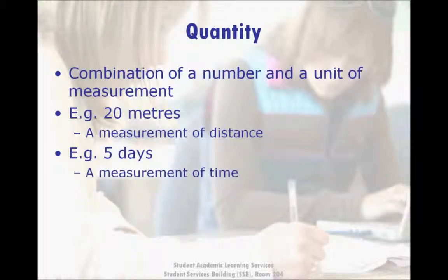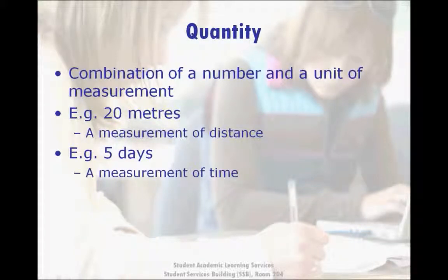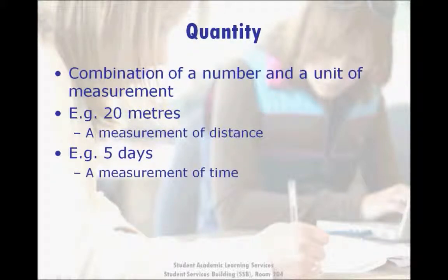A unit of measurement could be an object that is being counted, like people or apples, or a defined measurement of a concept like distance between two points. A meter, for example, is a measurement of distance that has a precise definition, and so 20 meters would be that same distance times 20. The meter is a unit measurement, which means it is a basic measurement that can be multiplied by a number to create bigger or smaller measurements.